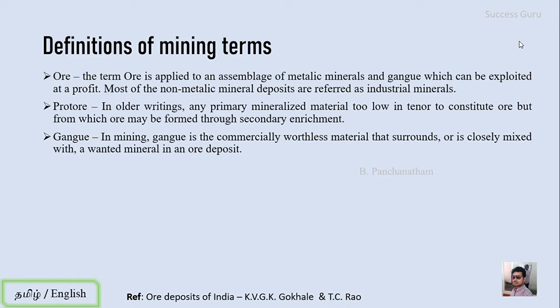The third term is gangue. In mining, gangue is the commercially worthless material that surrounds the ore or is closely mixed with the wanted material. So the ore implies both the metallic mineral deposit and the gangue.